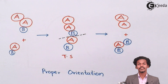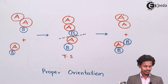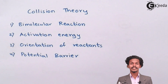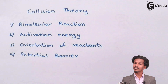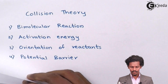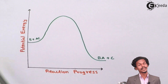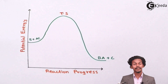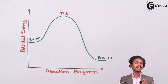The last factor is the potential barrier. The potential barrier means that when reactant molecules react with each other, they must cross a particular potential energy level; only then can they form a product. Looking at the graph, suppose we have reactant molecules A, C, and B. When they collide, they form a transition state. The energy of the reactant molecules A, C, and B is less compared to the transition state.